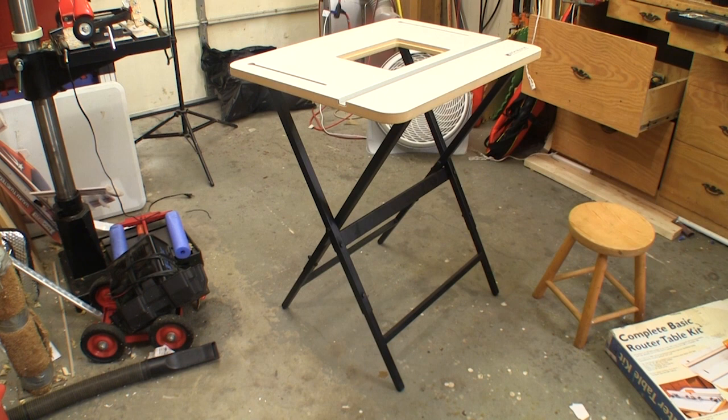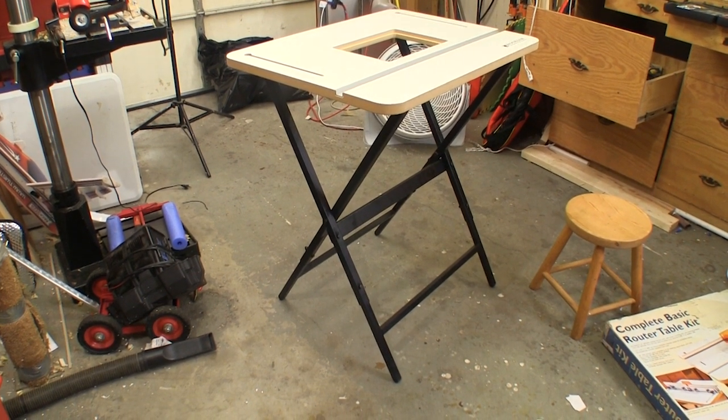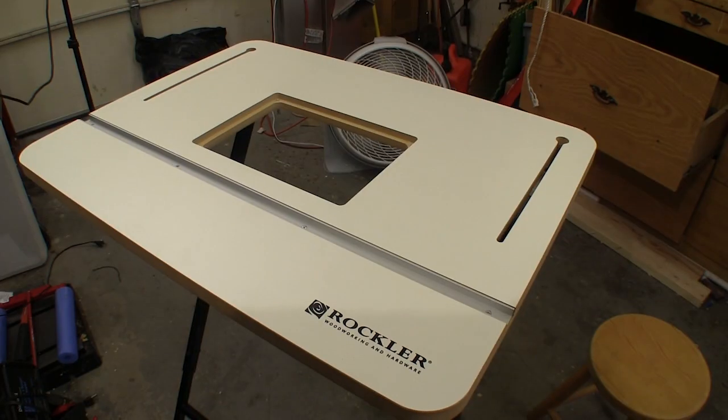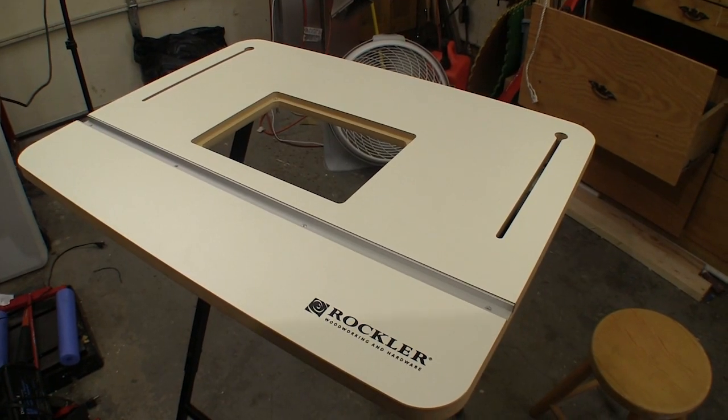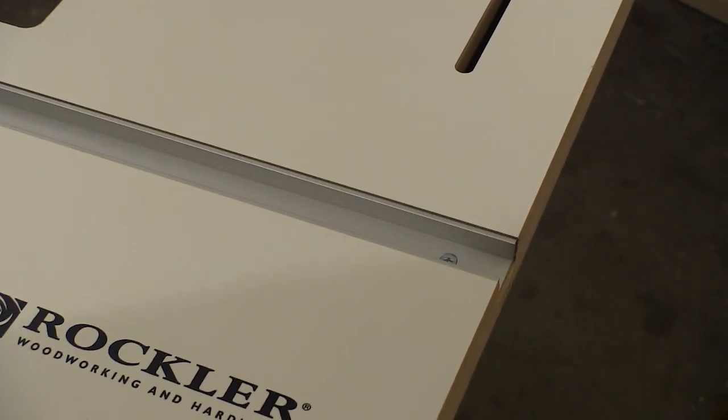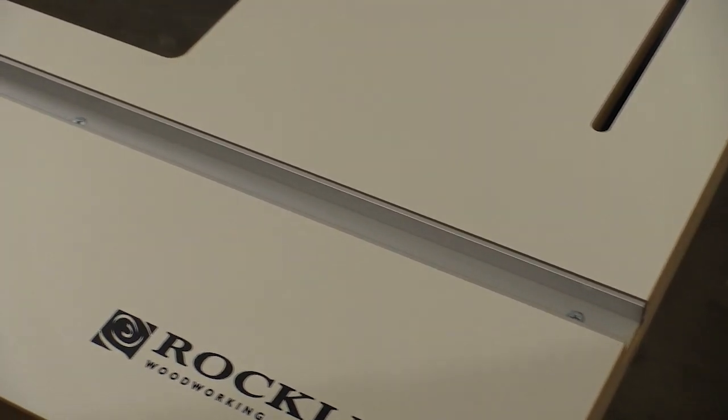This eliminates rocking that can be distracting while you're working on this table. The table surface is covered with melamine that allows the material to slide easily, and this full width miter track is installed at the factory. This allows you to use feather boards and other accessories, plus make jigs and sleds of your own.